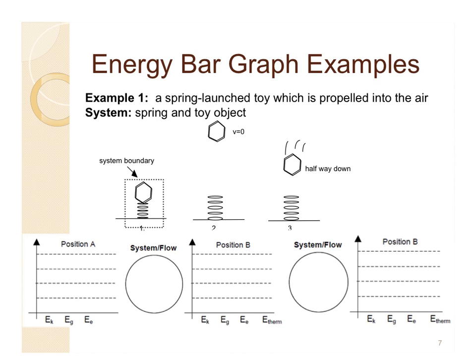The first thing you want to do when drawing an energy bar chart is to identify the system. Sometimes it'll be identified for you, as it is in this problem, so you can see the system boundary is already set up. But other times you'll have to figure it out, and sometimes there's more than one way to solve a problem. In this problem it looks like the little toy, the spring, and the earth are all going to be part of our system.